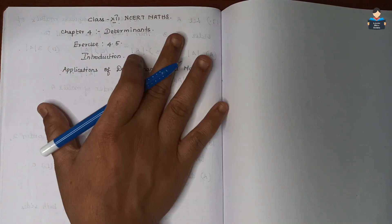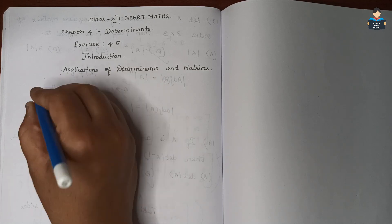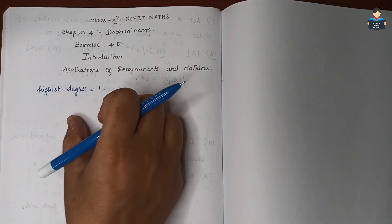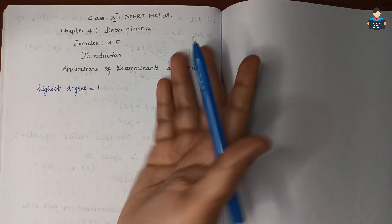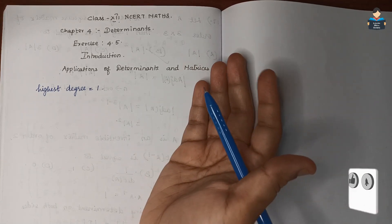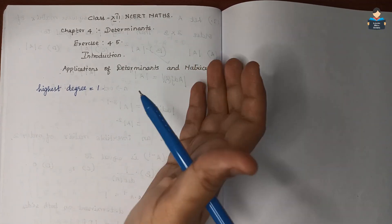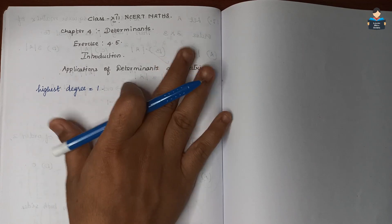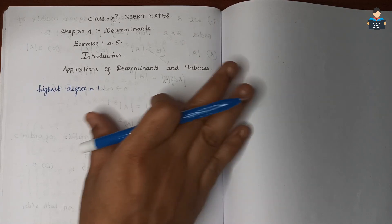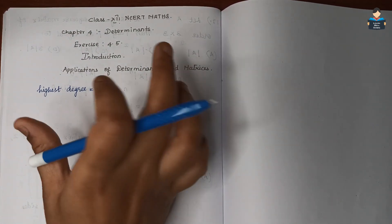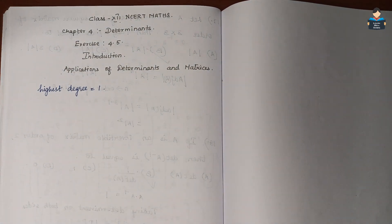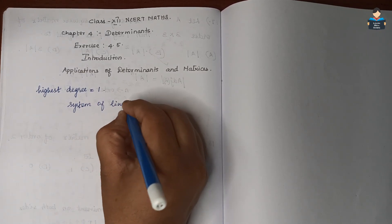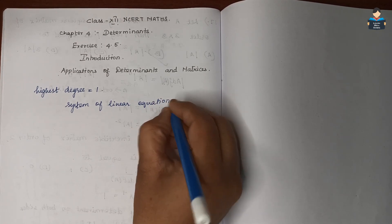We will look at the system of linear equations. Linear equations have the highest degree of 1. We will see how we apply determinants in linear equations — pair of linear equations with two variables, and equations with three variables. We will also look at the consistency of the system of linear equations.